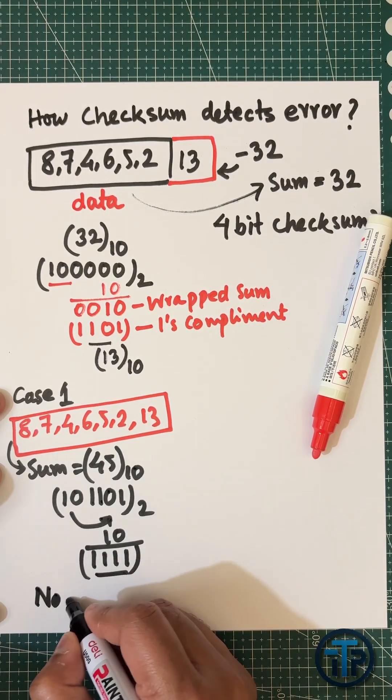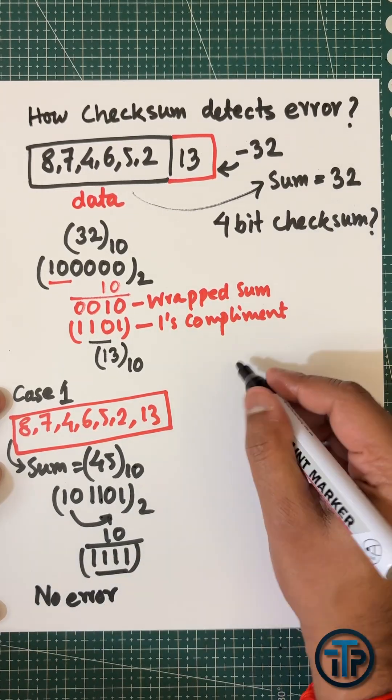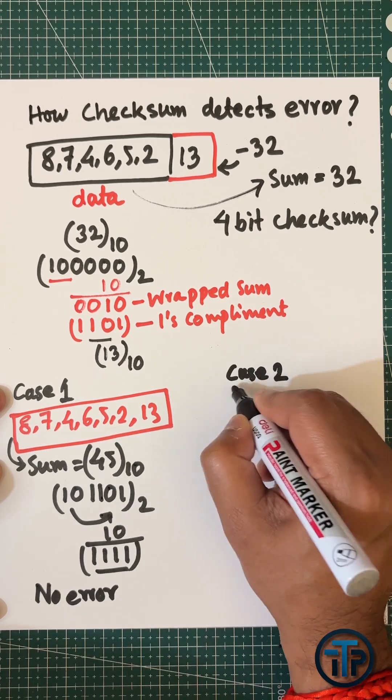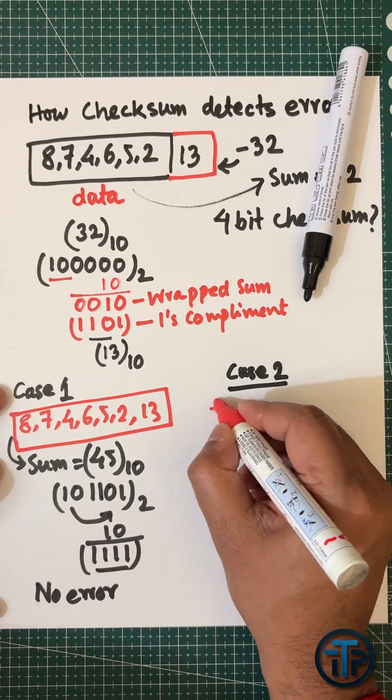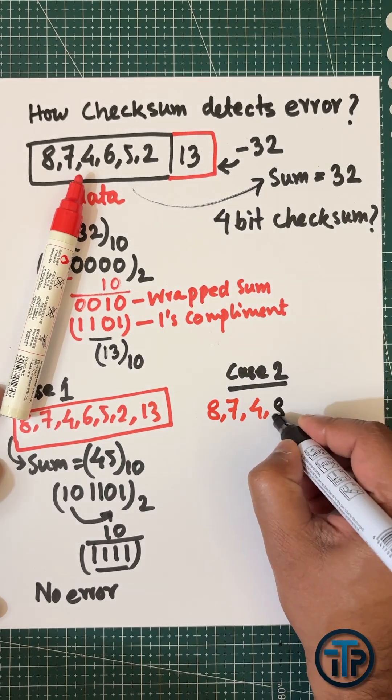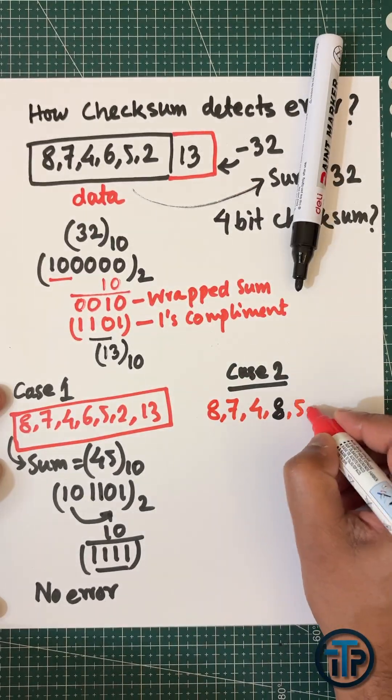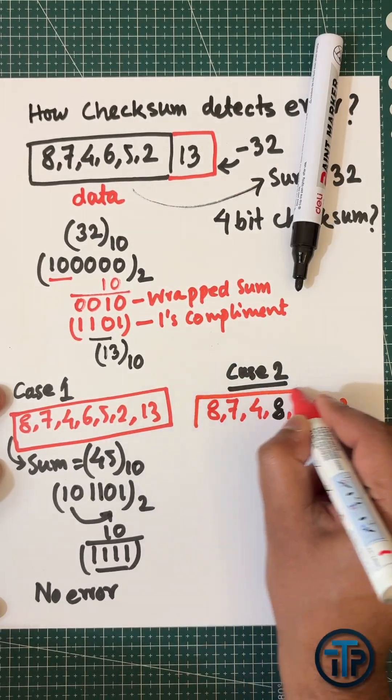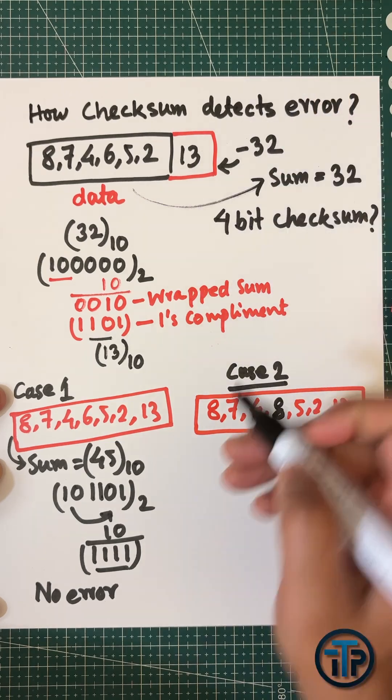Case 2: We intentionally change a digit. For example, the 6 is changed to 8. The sum will now be 47.